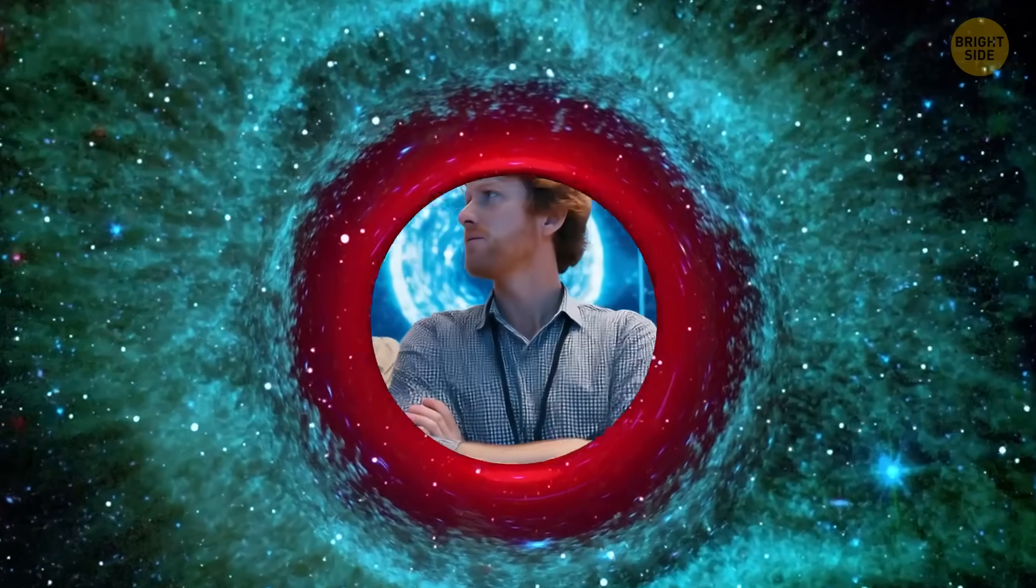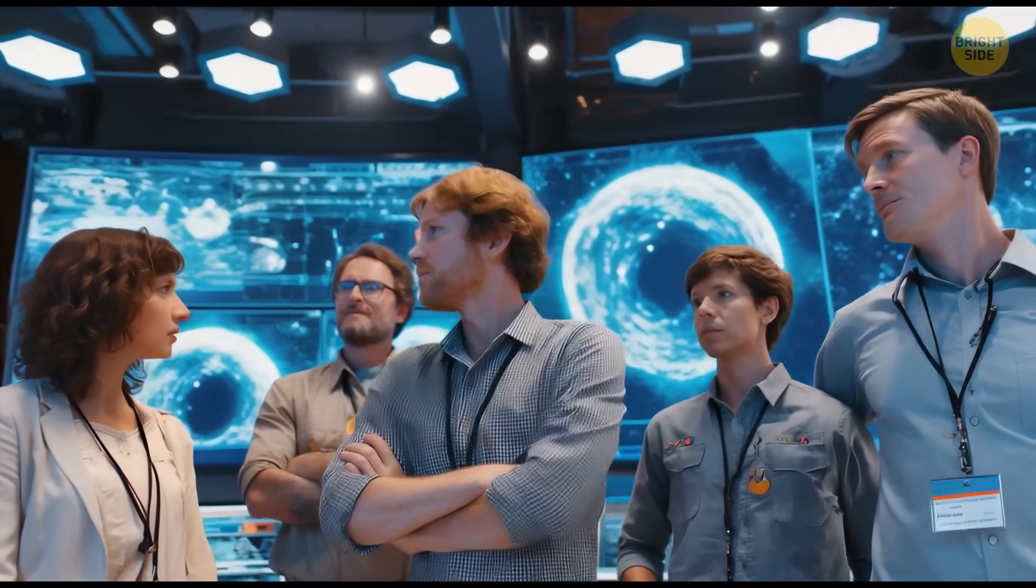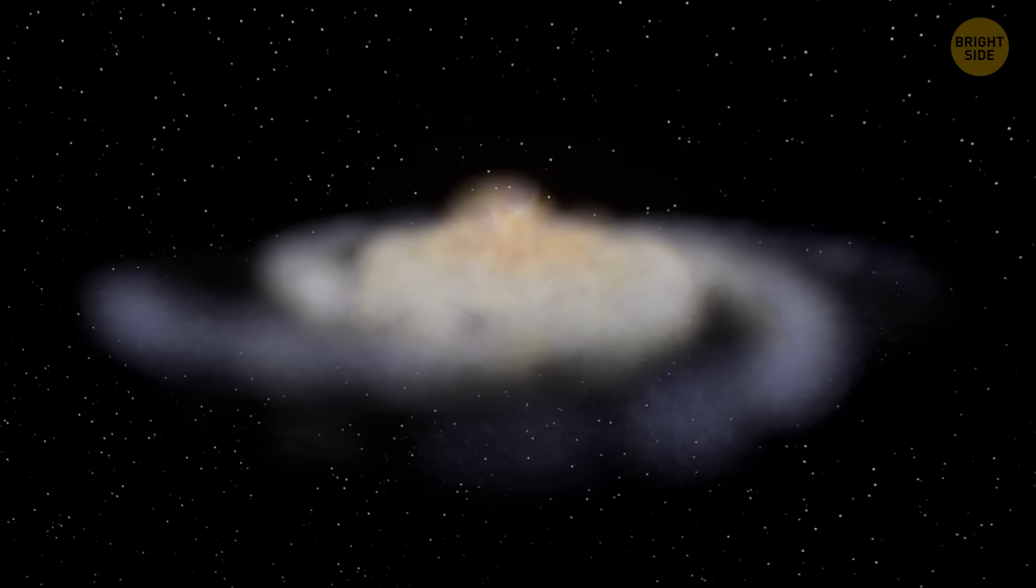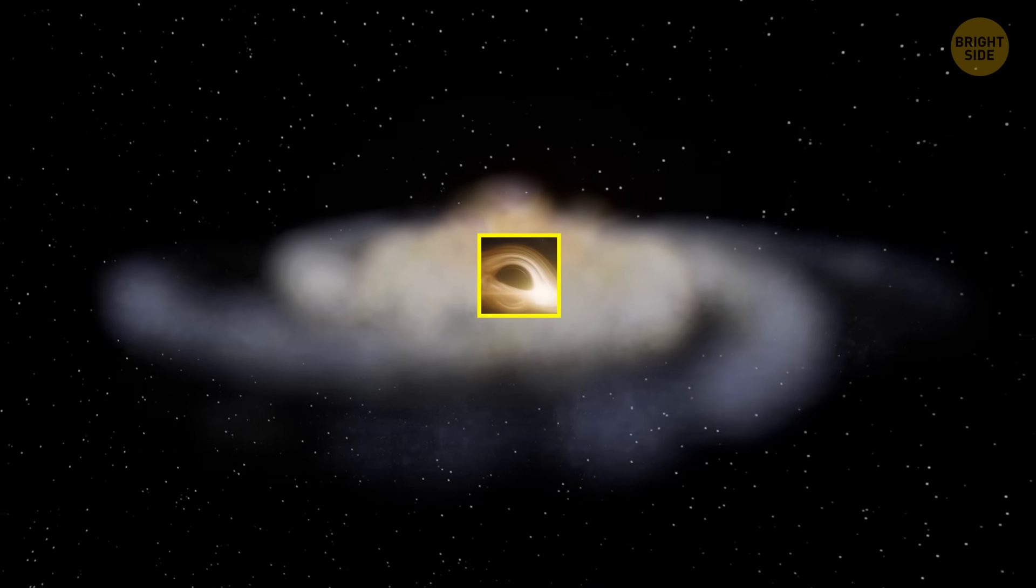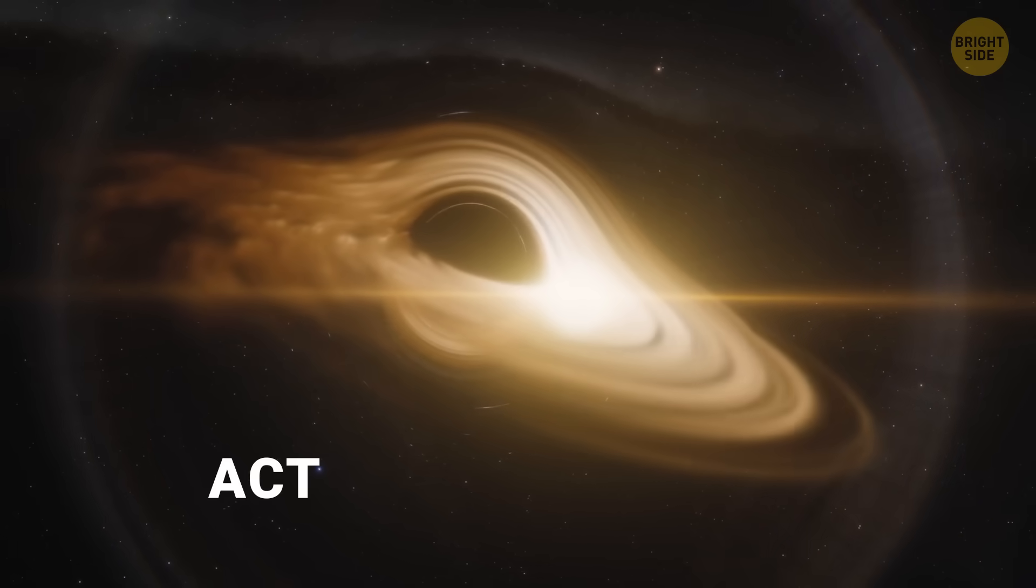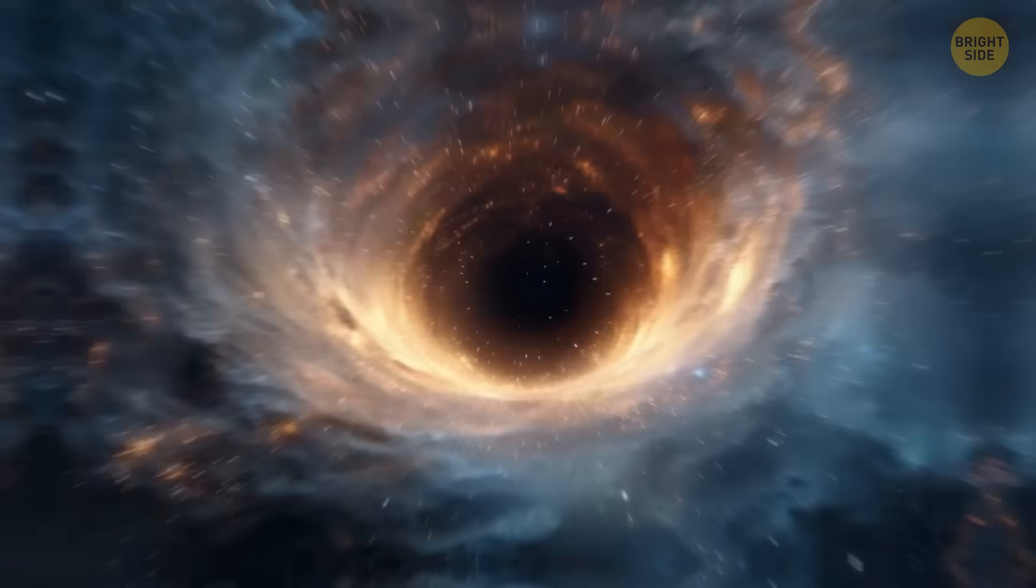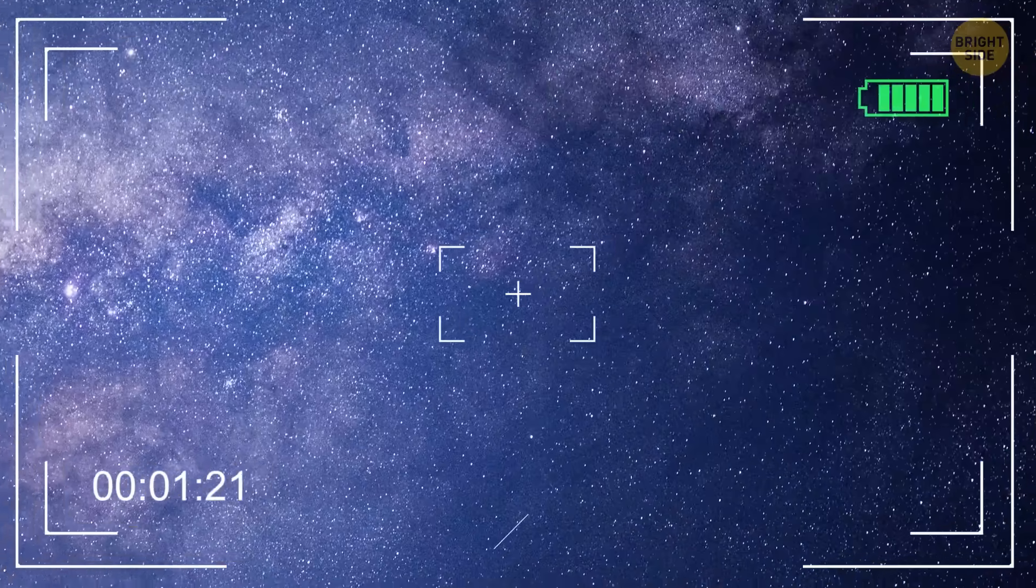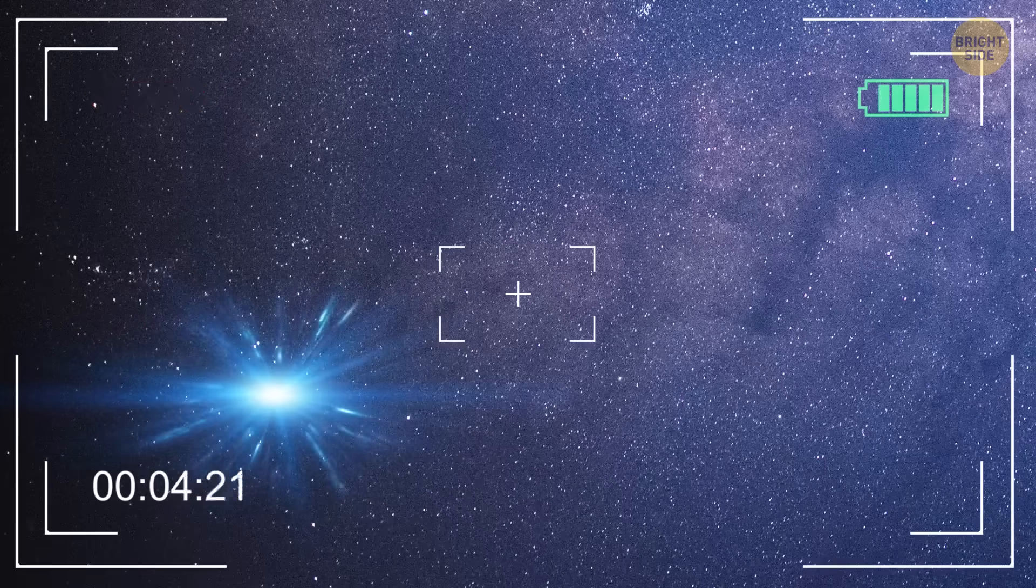Scientists have been debating this whole black hole or wormhole thing for decades. Back in 2021, some researchers wondered if the giant black holes at the centers of galaxies, called active galactic nuclei, were actually wormhole entrances. And in 2022, a team in Bulgaria said that the light coming from a wormhole could look almost exactly like what comes from a black hole.